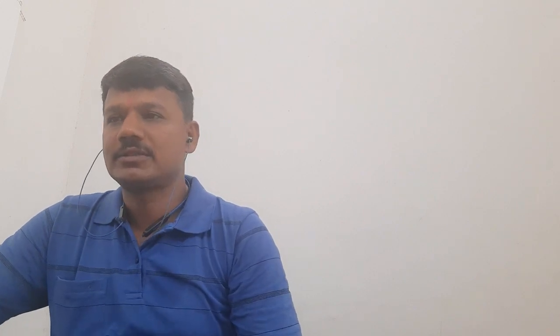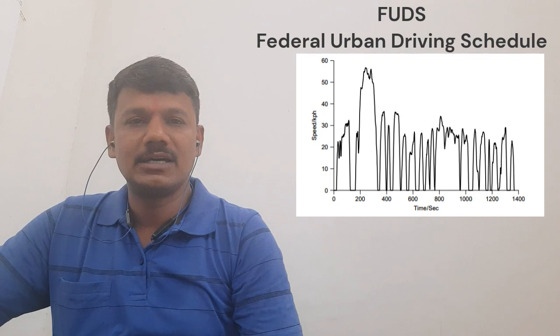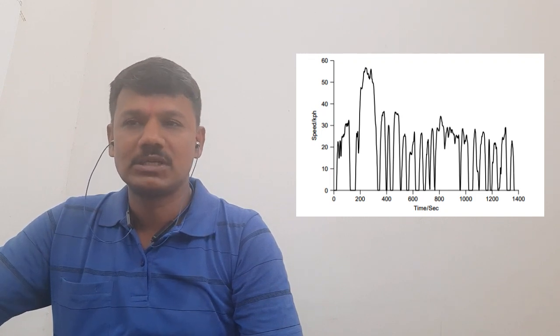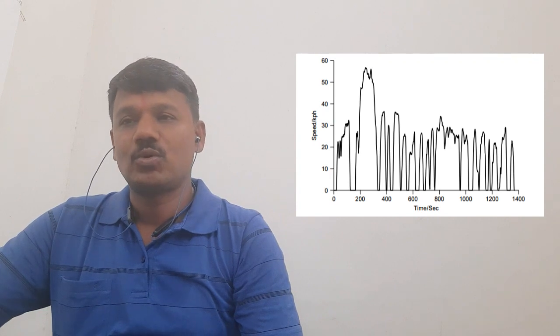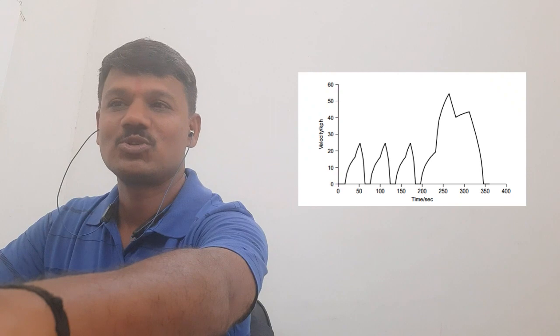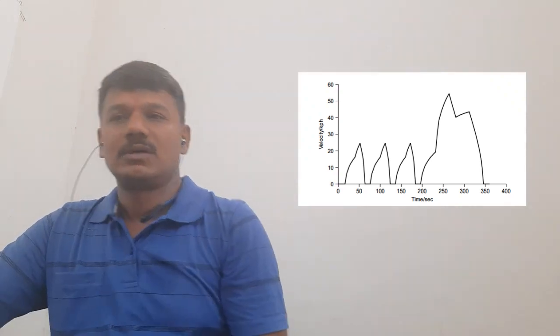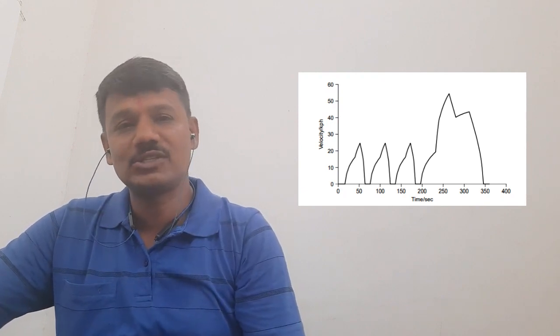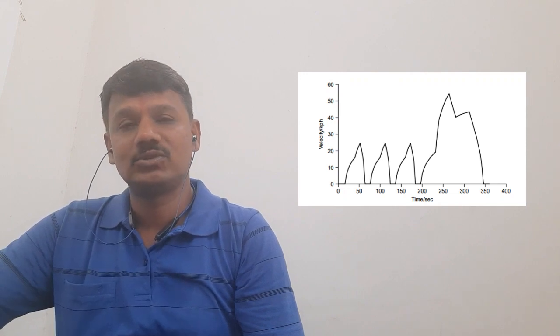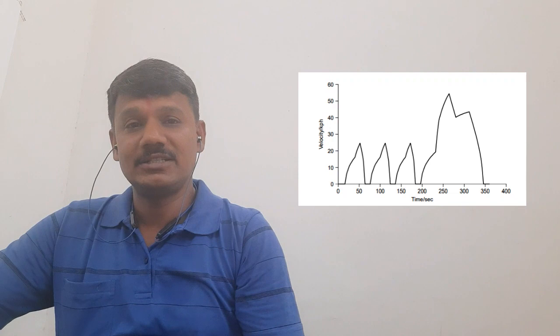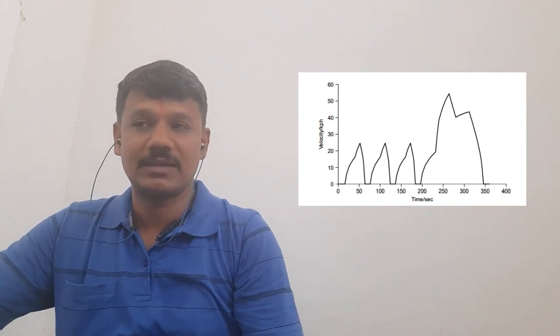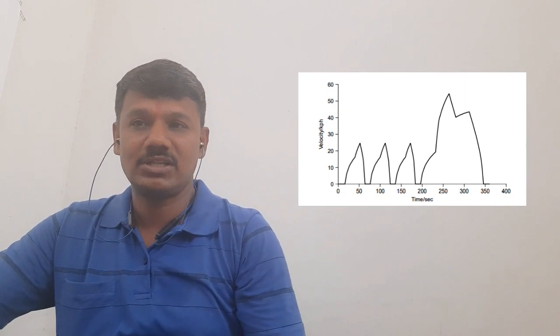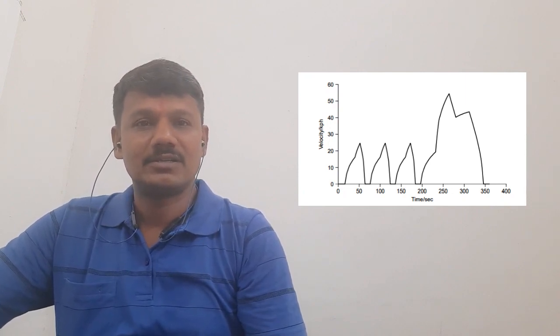Here is the FEDS cycle, which covers almost 1500 seconds. It shows the profile of speed with respect to those 1500 seconds. After that, there is a simplified version: the Simplified Federal Urban Driving Schedule. Comparing these two, it is easy to understand that the simplified driving cycle takes a linear characteristic for speed versus time. That simplified version is a 350-second driving cycle.